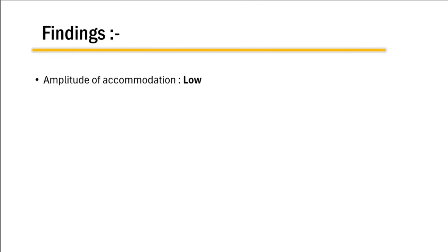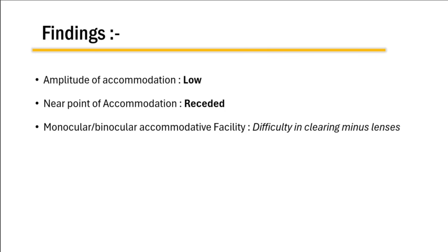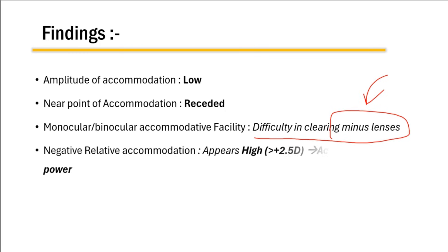When we carry out accommodative tests in these patients, in accommodative insufficiency you will find that the amplitude of accommodation is low and the near point of accommodation is receded. In monocular or binocular accommodative facility tests, the patient has difficulty clearing the minus lenses, because minus lenses stimulate accommodation and these patients have a problem with accommodation.